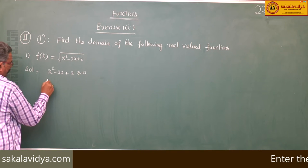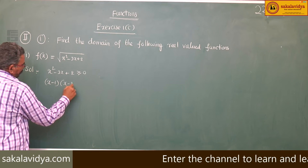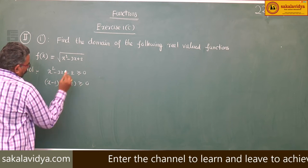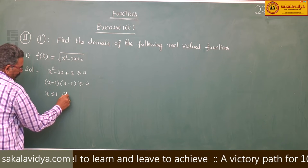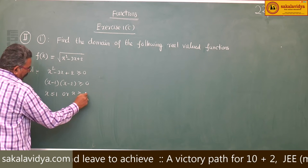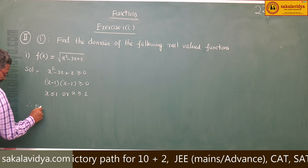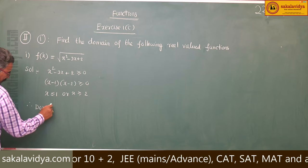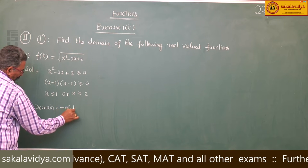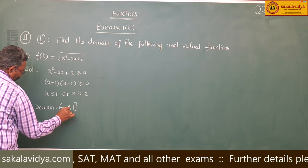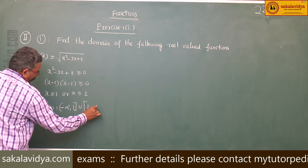This we can write as (x minus 1)(x minus 2) greater than or equal to 0, giving x less than or equal to 1 or x greater than or equal to 2. Therefore the domain of this function is equal to minus infinity to 1 union 2 to infinity.